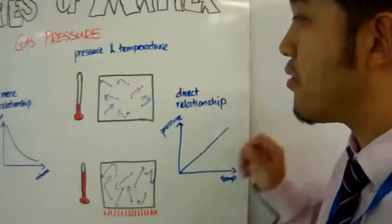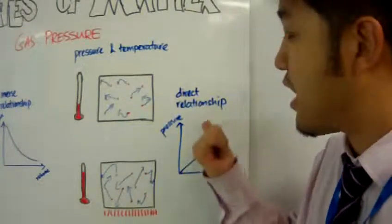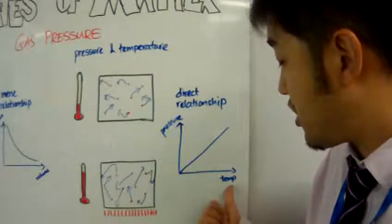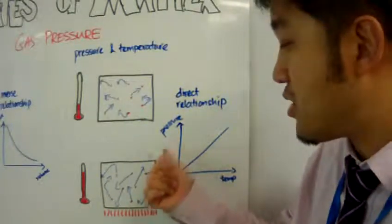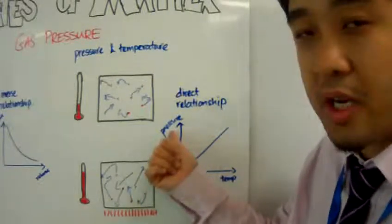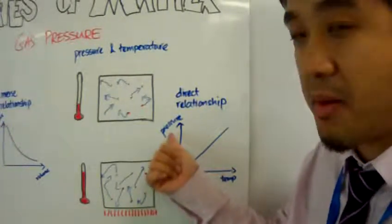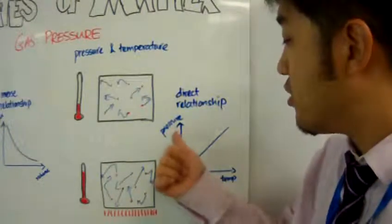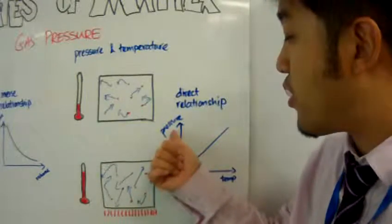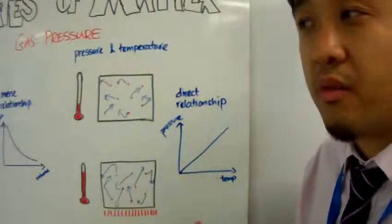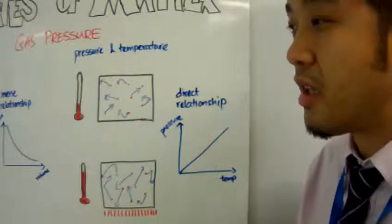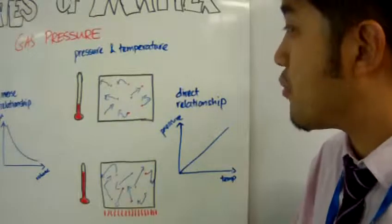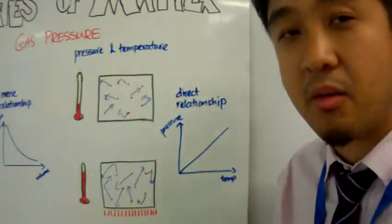The relationship between pressure and temperature is a direct one. When you increase the temperature, the pressure should also increase because there is more kinetic energy for the particles and the time it takes for the particles to hit the wall of the container is reduced. Also, if you increase the pressure, you should also experience an increase in the temperature of the container. So the relationship between pressure and temperature is a direct one.